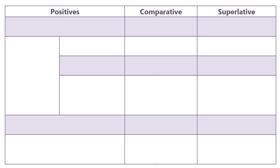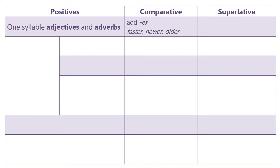There are many ways to make the comparative and superlative forms. Let's look at a chart and try to get a better idea. For one-syllable adjectives and adverbs, they are easy. Just add ER for the comparative: faster, newer, older. And for the superlative, add EST: fastest, newest, oldest.